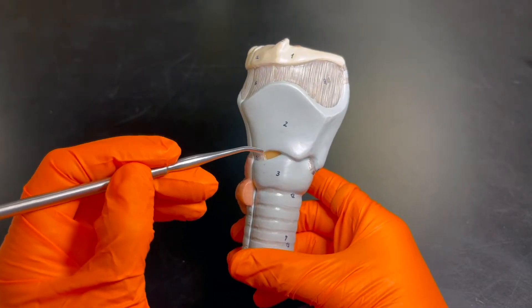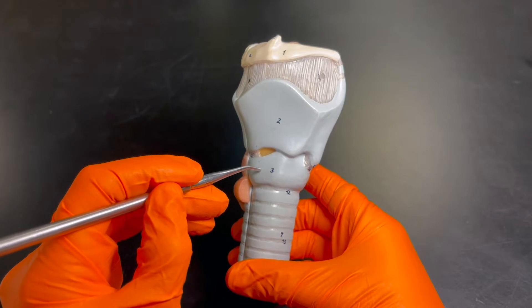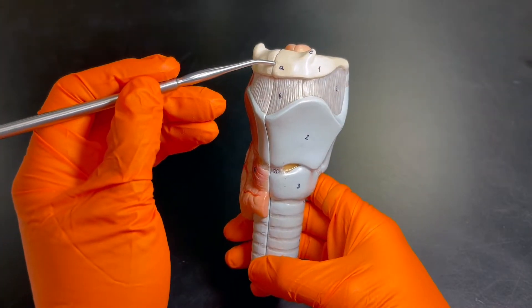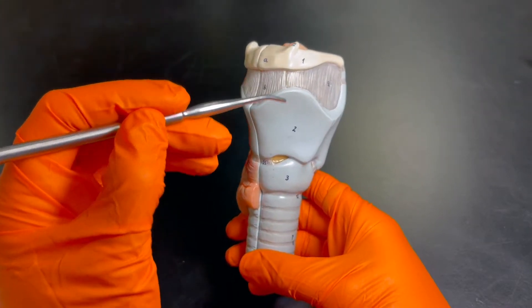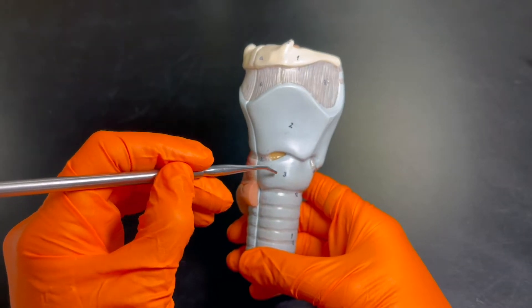Then right here, we're going to move inferiorly, we have the cricoid cartilage.